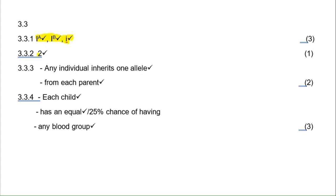The alleles for 3.2.1 are A, B, and O. The number of alleles an individual can inherit is two — not three — because one comes from each parent. For 3.2.3 and 3.2.4: each child has an equal — 25% — chance of having any blood group. This question is about nine marks in the paper. There are three alleles, you can only inherit two, and when all three are present each child has a 25% chance. The memo will be provided.